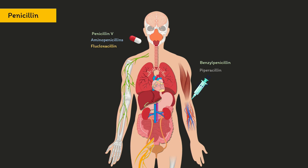They are distributed in the extracellular fluid but do not cross the blood-brain barrier unless the meninges are inflamed. Penicillins are secreted by the kidney and have a short half-life.